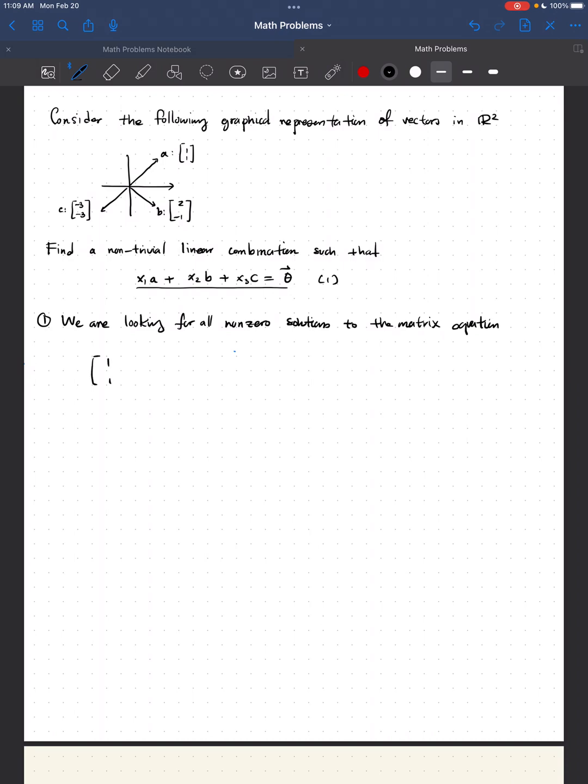to the matrix equation given by this: [1, 2, -3; 1, -1, -3] times [x1, x2, x3] equal to [0, 0]. This is, we want to know if the matrix given by [1, 2, -3] on the first row, [1, -1, -3] on the second row, has a non-trivial null space.